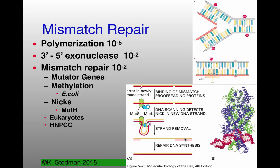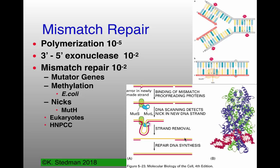The big question in eukaryotes is how they know which strand is the new strand and which is the old strand. This mostly seems to be because the lagging strand in particular has many nicks in it, as it's being made in a semi-discontinuous fashion. The leading strand probably also has a number of nicks in it as well.